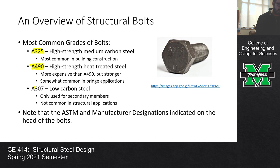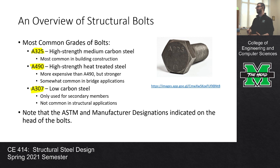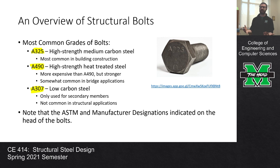There are other grades of bolts such as A307s, but they're very uncommon — we really only use them for secondary members. They do get referenced in some sections of the manual, which is why I mention them, but they're secondary bolts not really used in structural applications.